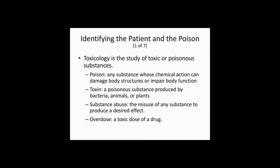Another testable slide covers key terms. A poison is any chemical that has an impact on the body — on physiology, anatomy, or both. A toxin is a poisonous chemical specifically produced by a living being: plants, bacteria, or animals. Venom is considered a toxin. Houseplants kids eat can cause illness — that's a toxin. Secreted oils from poison ivy are a toxin, not technically a poison.